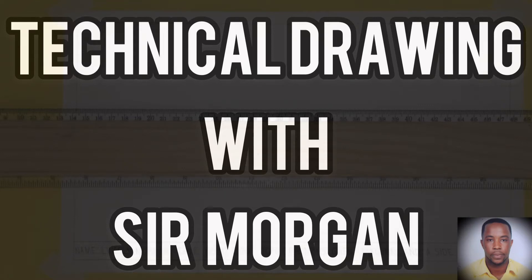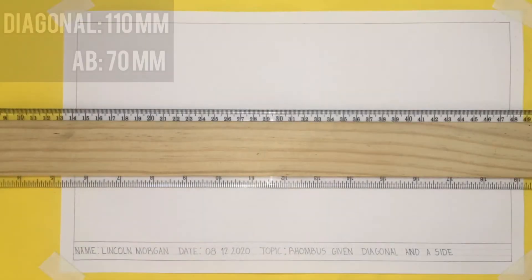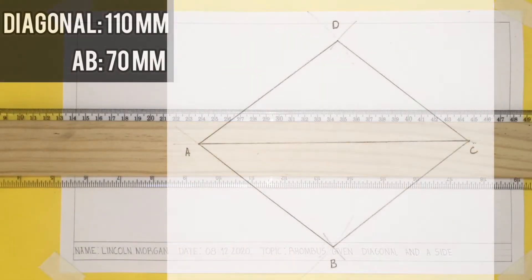Greetings everyone, Sir Morgan here from the technical department. Today I'll be showing you how to construct a rhombus when given the diagonal length and also the length of any one side.